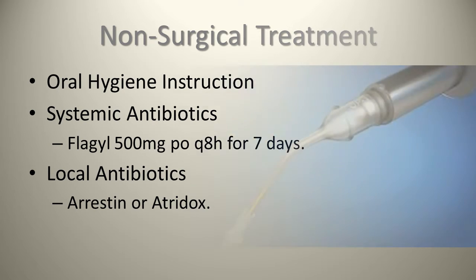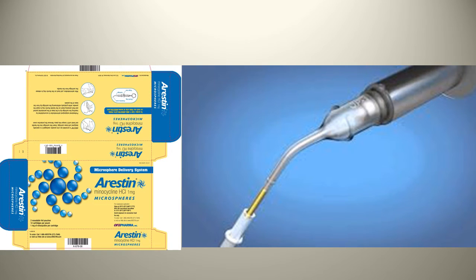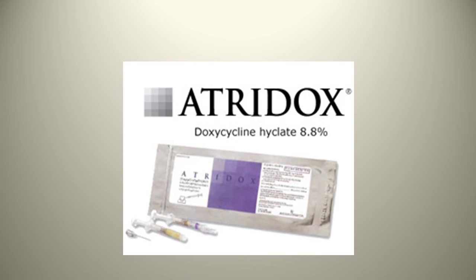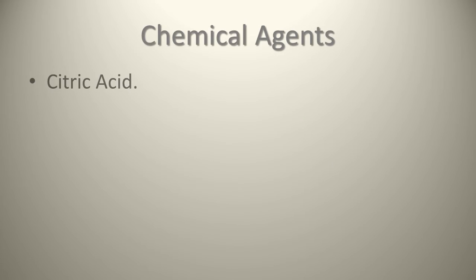Local antibiotics can also be used, such as Arrestin or Atridox, which work very well. Arrestin comes in single-dose ampules containing minocycline microspheres at one milligram. Atridox uses doxycycline. Key differences: Arrestin is easier and more cost-effective for single cases, while Atridox requires treating multiple sites and involves mixing Part A and Part B — once mixed, it has a limited use window and requires cool storage. Arrestin can be kept in any operatory.